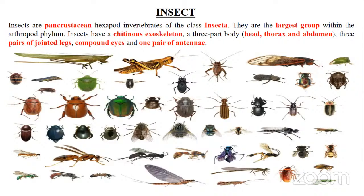Insects have a chitinous exoskeleton. The outer covering of insects is made up of chitin. The insect cuticle is made up of chitin, which is a very hard material. This is called an exoskeleton — 'exo' means outer layer. Most insects are covered with this exoskeleton made up of chitin.